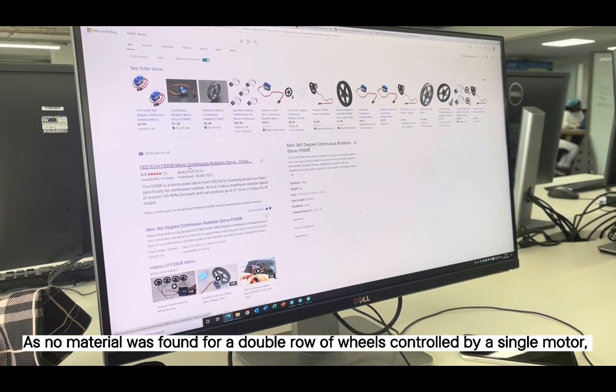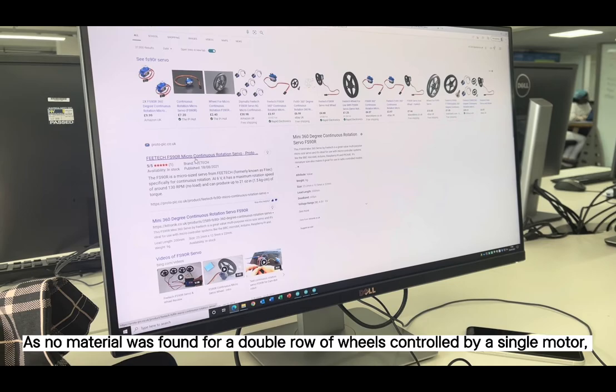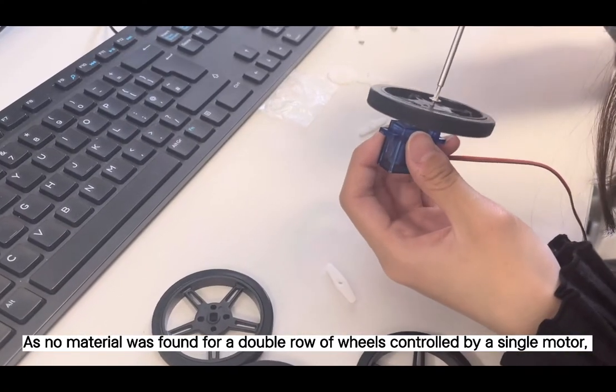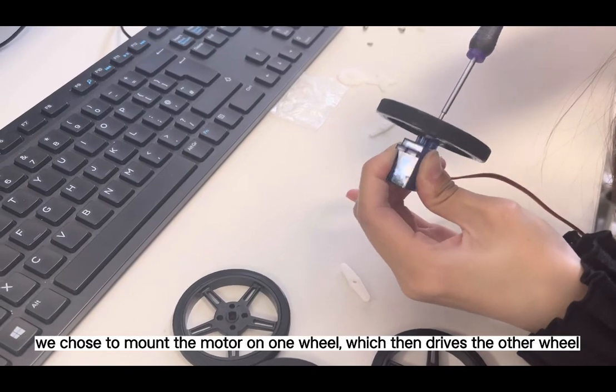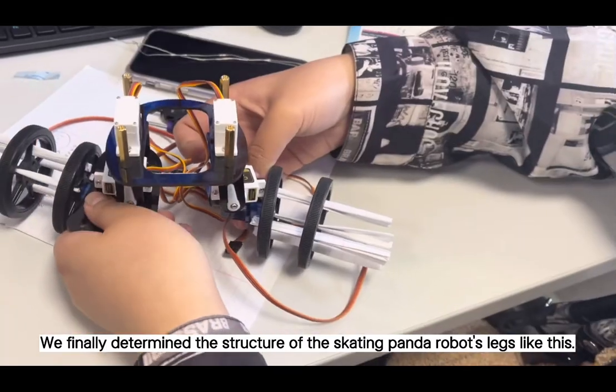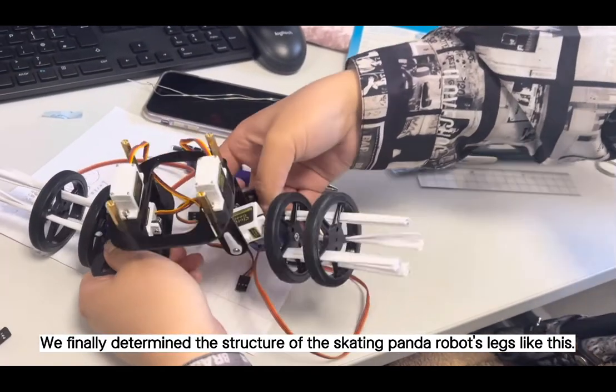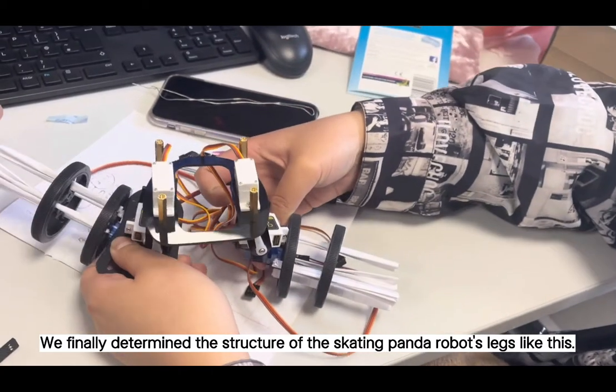As no materials were found for the double row of wheels controlled by a single motor, we chose to mount the motor on one wheel which then drives the other wheel. We finally determined the structure of the skating panda robot like this.